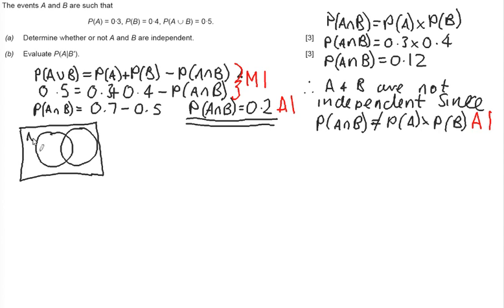So here's A, here's B. I know the intersect is 0.2, so we're going to put 0.2 in the middle there. A has a total probability of 0.3, so this section must be 0.1. B has a total probability of 0.4, so that means that this other part must be 0.2. So that means outside, the remaining probability to add it up to 1 is 0.5.